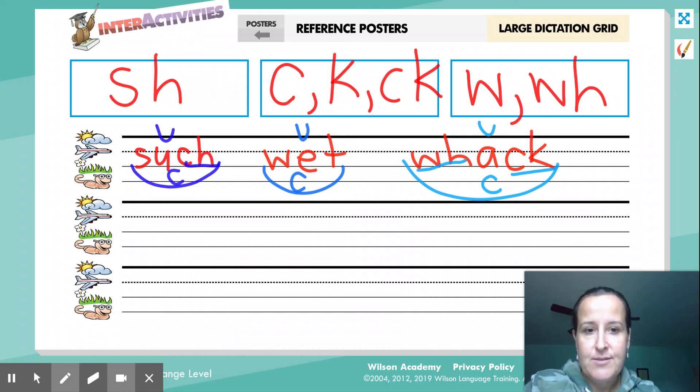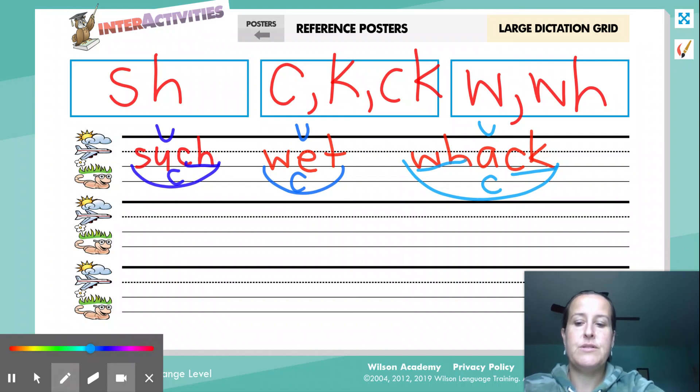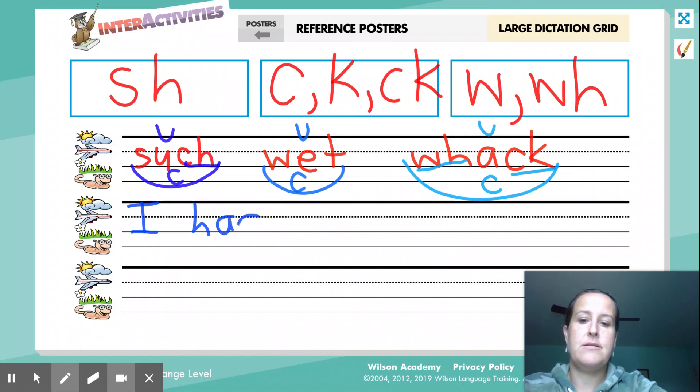Okay, now on the bottom we're going to write a sentence, okay? So we're going to echo the sentence first. So listen carefully. I had to zip my bag. Now echo the first part. I had, good, to zip my bag. Awesome. Okay, so now you're going to write it. What's the first word? I had to zip my, there's a trick word, bag.